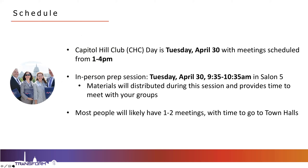Capitol Hill Club Day is Tuesday, April 30th. We've got meetings scheduled up on the Hill from 1 to 4 p.m. The main stage session will end, and then you'll be able to jump on buses that will take you directly to the Hill. We do have an in-person prep session that same day—Tuesday, April 30th from 9:30 to 10:30 in the morning in Salon No. 5. It's also during this session that we will distribute some of your materials and provide time to meet with others in your group. Please mark your calendars to be in that session so you're all ready to go up to the Hill and meet legislators.